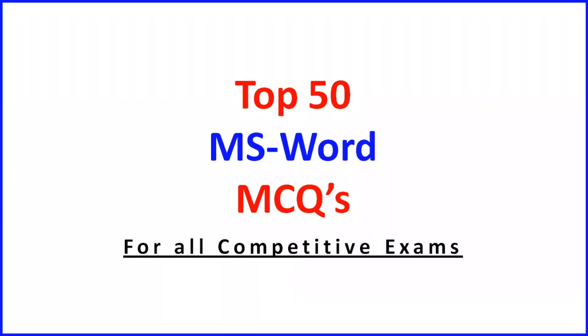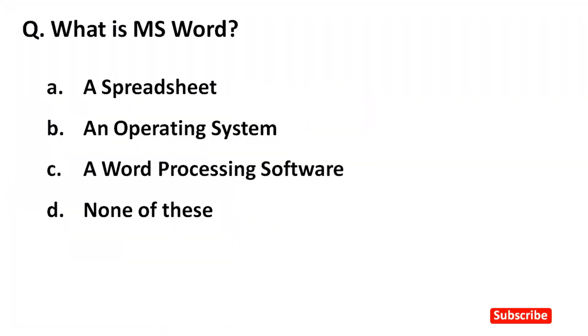Hi guys, aaj ki is video mein hum dekhenge MS Word ke top MCQ. Question no. 1: What is MS Word? Right answer is option C — a word processing software.